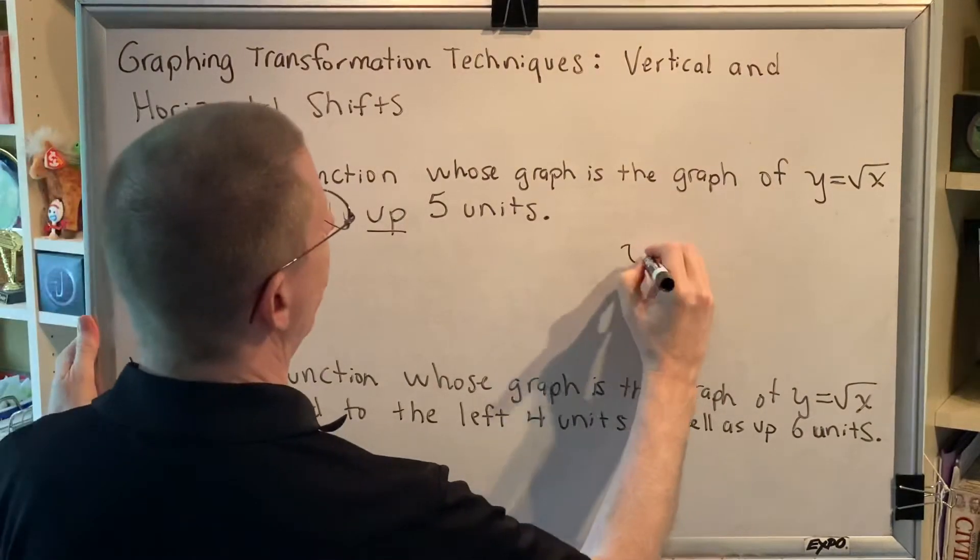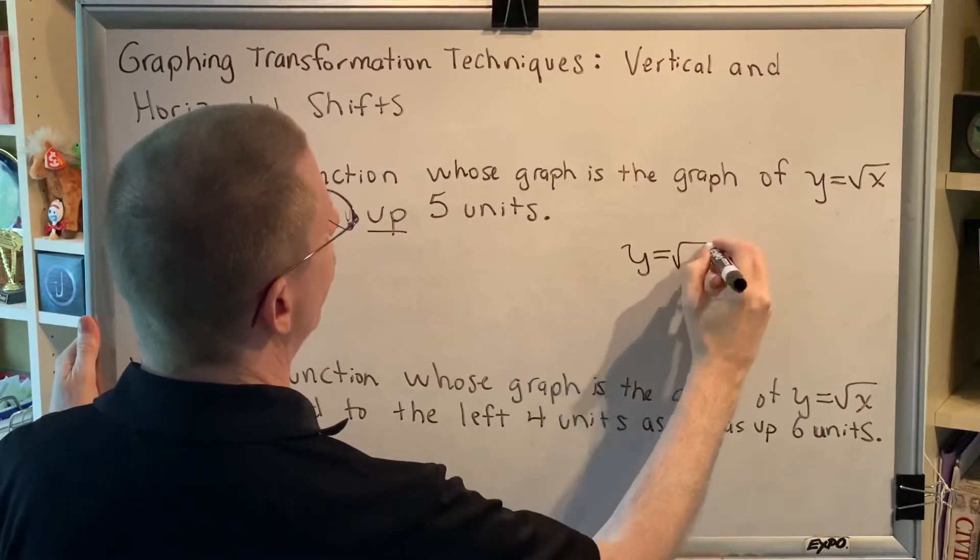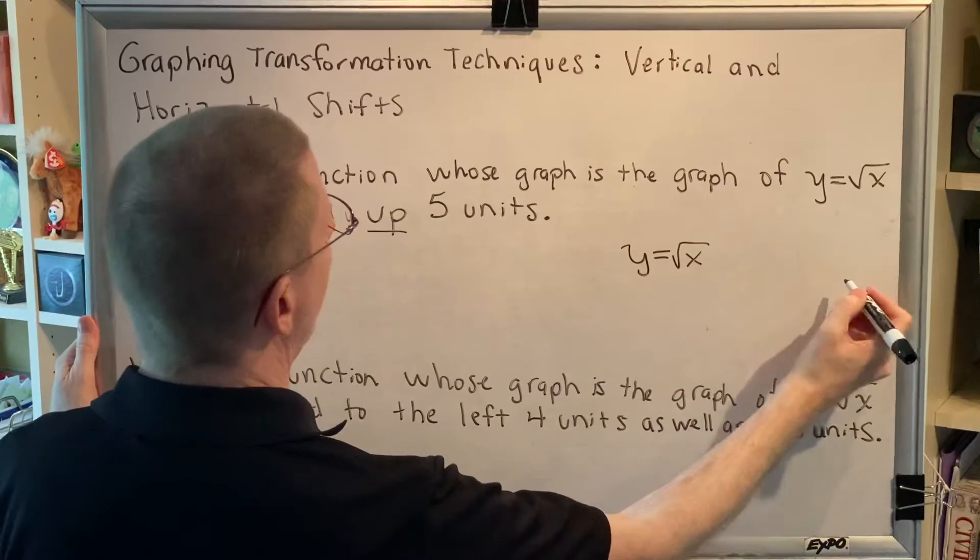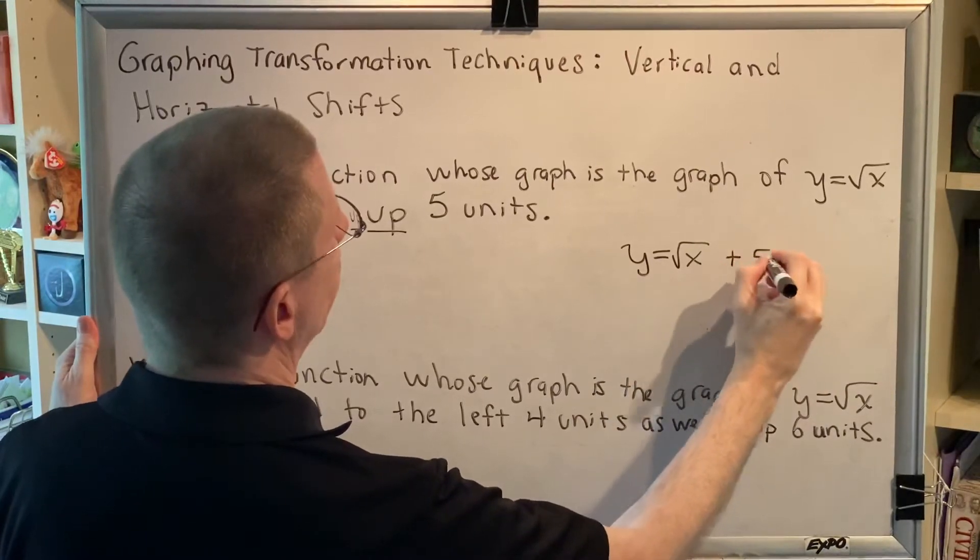So the answer to our question will be y equals the square root of x, and then outside of the radical we'll put plus five.